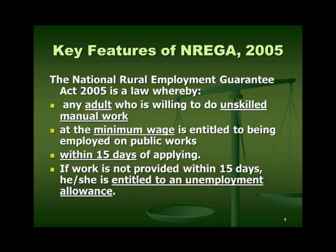Now let us look at the features of each anti-poverty measure. First, NREGA, also known as MNREGA. NREGA was implemented in 2005. Under this policy, people who are willing to do unskilled manual work are provided work by the government. Minimum wages are entitled for such labor.